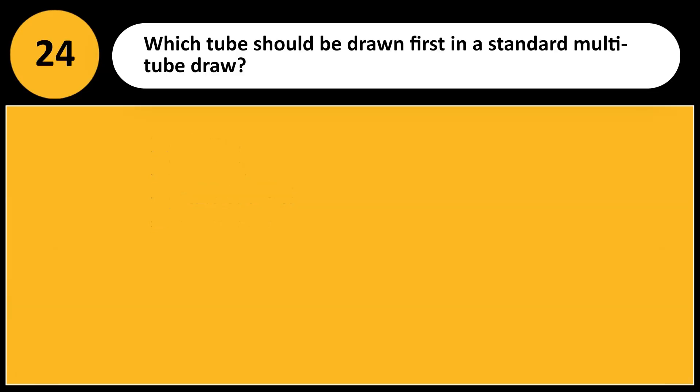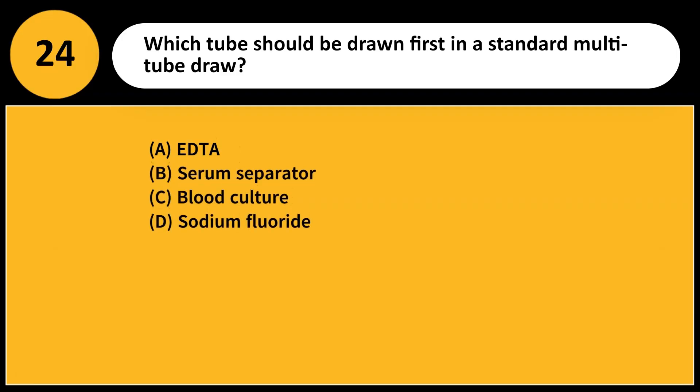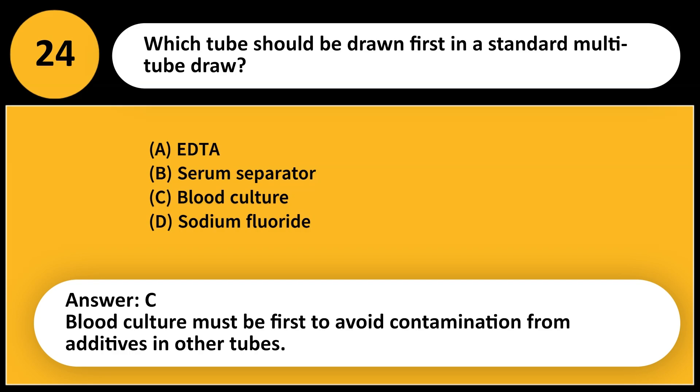Which tube should be drawn first in a standard multi-tube draw? A. EDTA. B. Serum separator. C. Blood culture. D. Sodium fluoride. Answer: C. Blood culture must be first to avoid contamination from additives in other tubes.